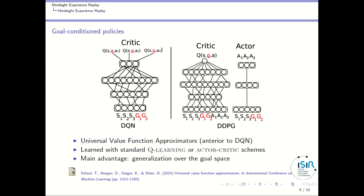Just as with state generalization, you might be able to evaluate correctly or perform the correct action in a state you have not seen, or for a goal you have not seen yet. These schemes rely on previous work about universal value function approximators, a work from Tom Schaul, which was anterior to the rise of deep reinforcement learning studies.